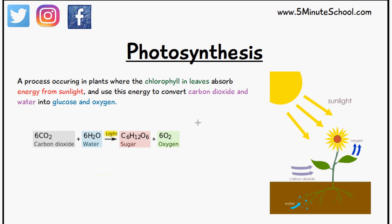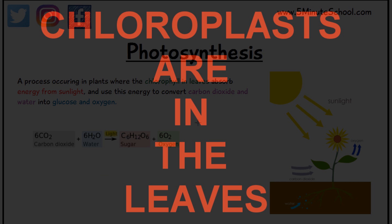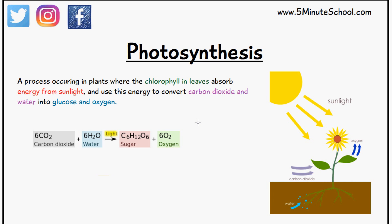So photosynthesis is where the chloroplasts, which contain a substance called chlorophyll, absorb the sunlight that they're receiving and they use this energy to convert carbon dioxide, which they get from the air through the leaves, and water, which they get from the roots, and it converts this carbon dioxide and water into glucose and oxygen.